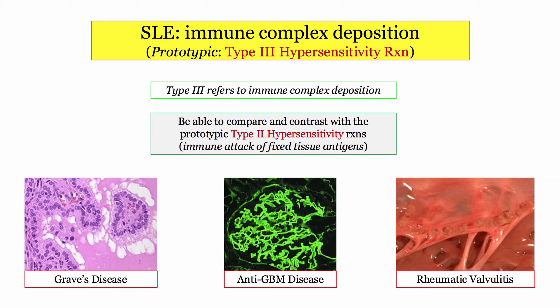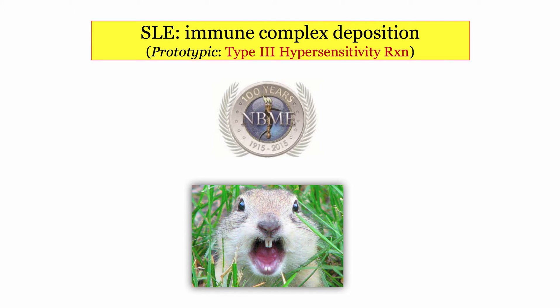Of these, rheumatic fever is the most troublesome, as students confuse the valvulitis — which is a type 2 hypersensitivity reaction — with post-streptococcal glomerulonephritis, which is type 3. Although both disorders are immune manifestations of Strep pyogenes, they represent different entities with different immune mechanisms of damage. Be sure to understand this distinction — the difference between type 2 and type 3 hypersensitivity reactions is a key takeaway.